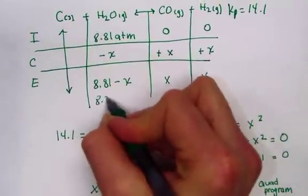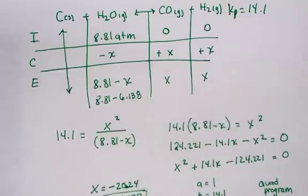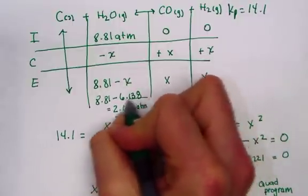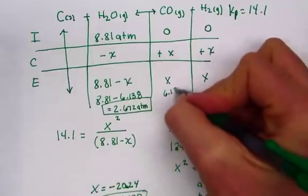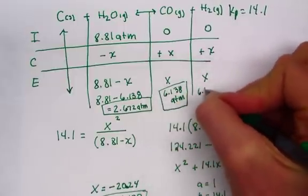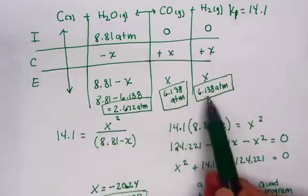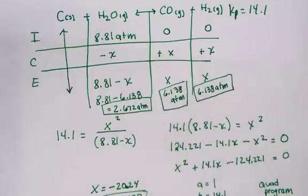8.81 minus 6.138 equals 2.672 atmospheres of pressure at equilibrium for the water. 6.138 atmospheres, the equilibrium pressure for carbon monoxide. And the same 6.138 atmospheres for the hydrogen gas. The value for x was used to determine the equilibrium row of our ICE chart.